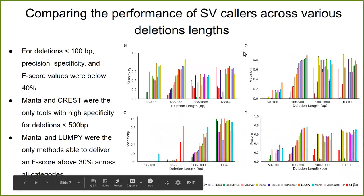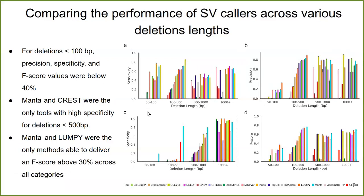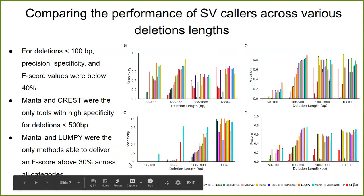We then compare the performance of our SV callers across various deletion lengths, dividing the deletions detected by each tool into four categories based on length: from 50 to 100 base pairs, up to more than 1,000 base pairs. For short deletions less than 100 base pairs, the precision, specificity, and F-score values are typically low — less than 40% irrespective of the tool. For deletions less than 500 base pairs, Manta and CRISP were the only two tools to have a high specificity value. For the F-score, Manta and Lumpy were the only tools with an F-score of 30% consistently across all four deletion length categories, and hence were our best performing tools.